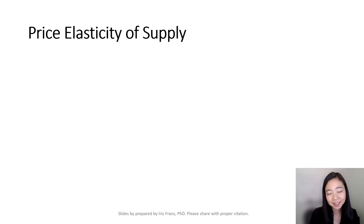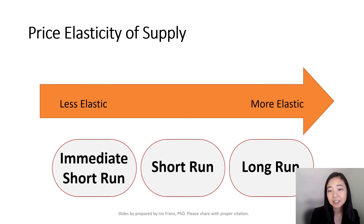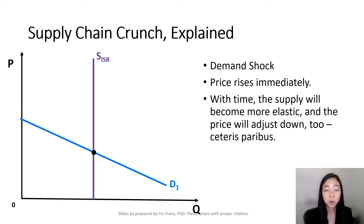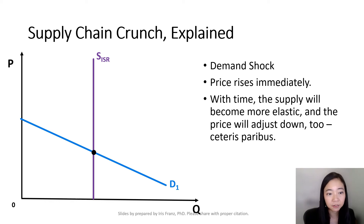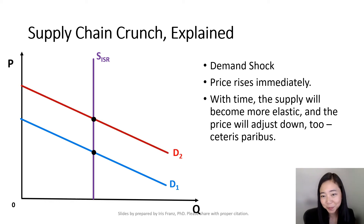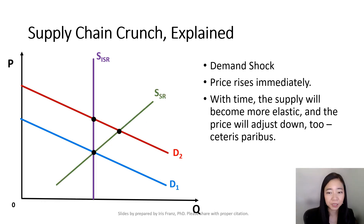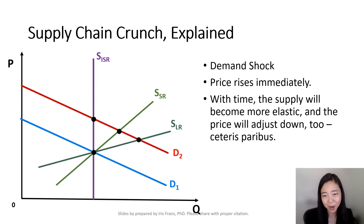Here is our summary: the longer the time you have, the more elastic your supply is. In 2021 and 2022, we often heard about the supply chain crunch. What does that mean? Well, that means after the pandemic there was a demand shock — demand increases from D1 to D2. In the short run, because firms cannot quickly adjust the quantity, all they could do is raise the price. With time, supply is going to become more and more elastic and the price will also go down.